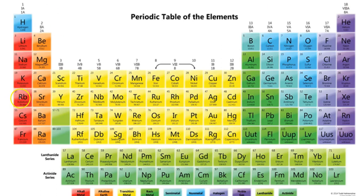In spite of remembering the elements according to group and period, by looking at the electronic configuration we will be able to predict the position easily. But how does that happen is the question. Let us take a fresh page to understand this in detail.